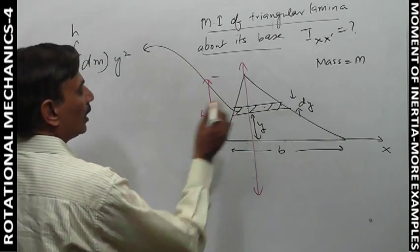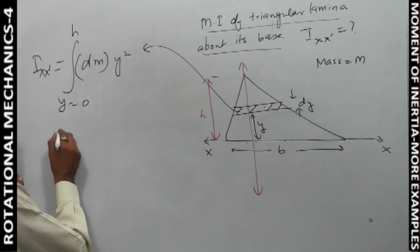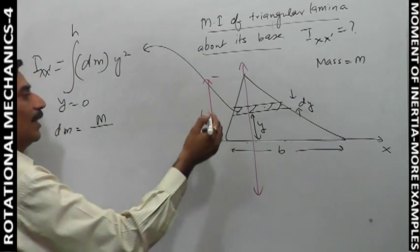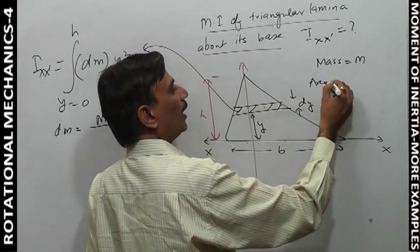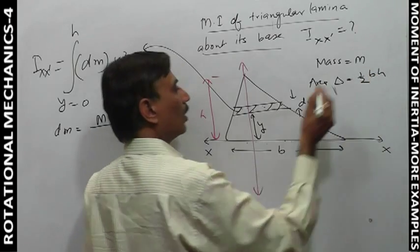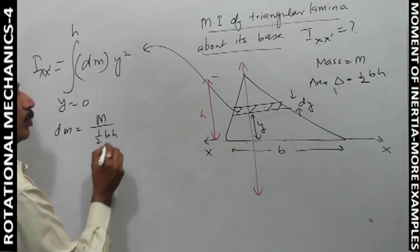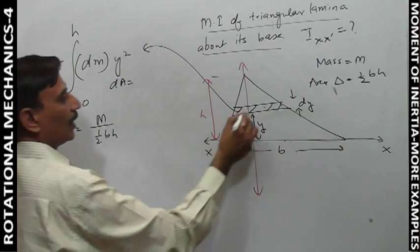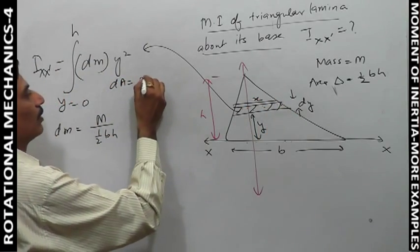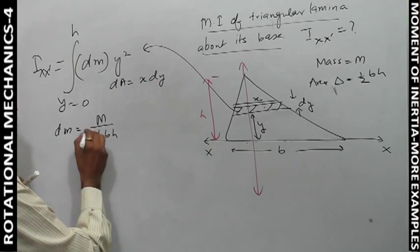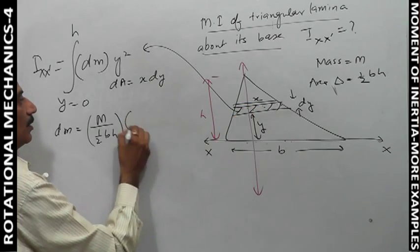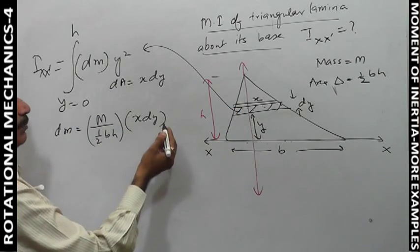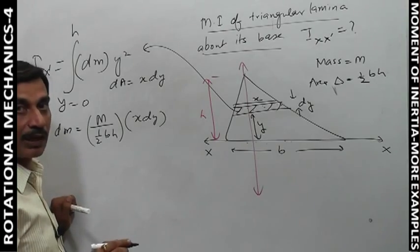Now how did dm come? dm equals total mass m divided by total area. The triangle's area is half base times altitude, that is (1/2)bh. And this strip's area da is x·dy. So dm = (m/(½bh))·x·dy. Now both x and y are present, so we need a relation to express x in terms of y.